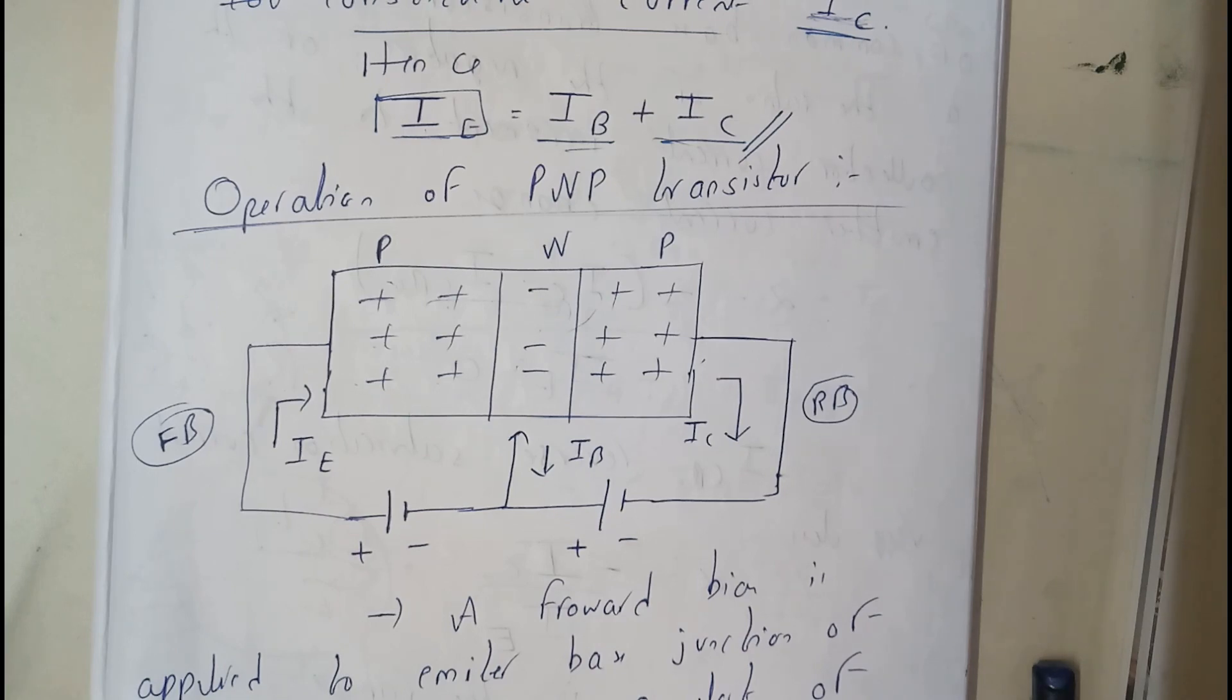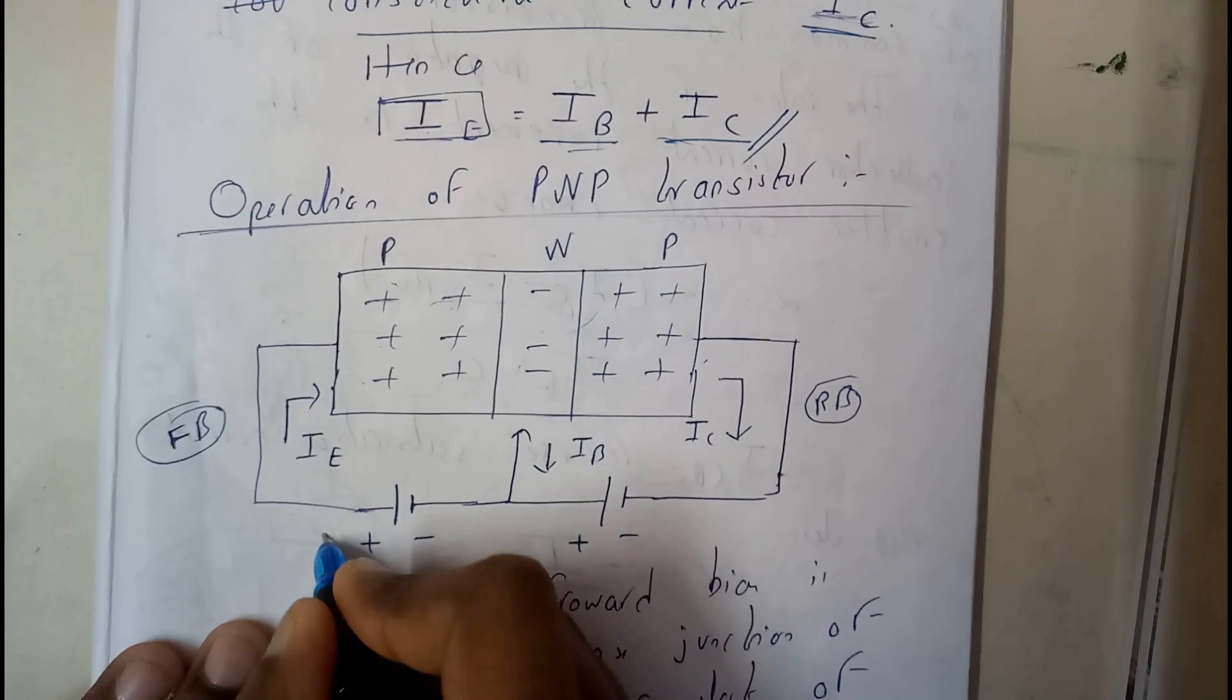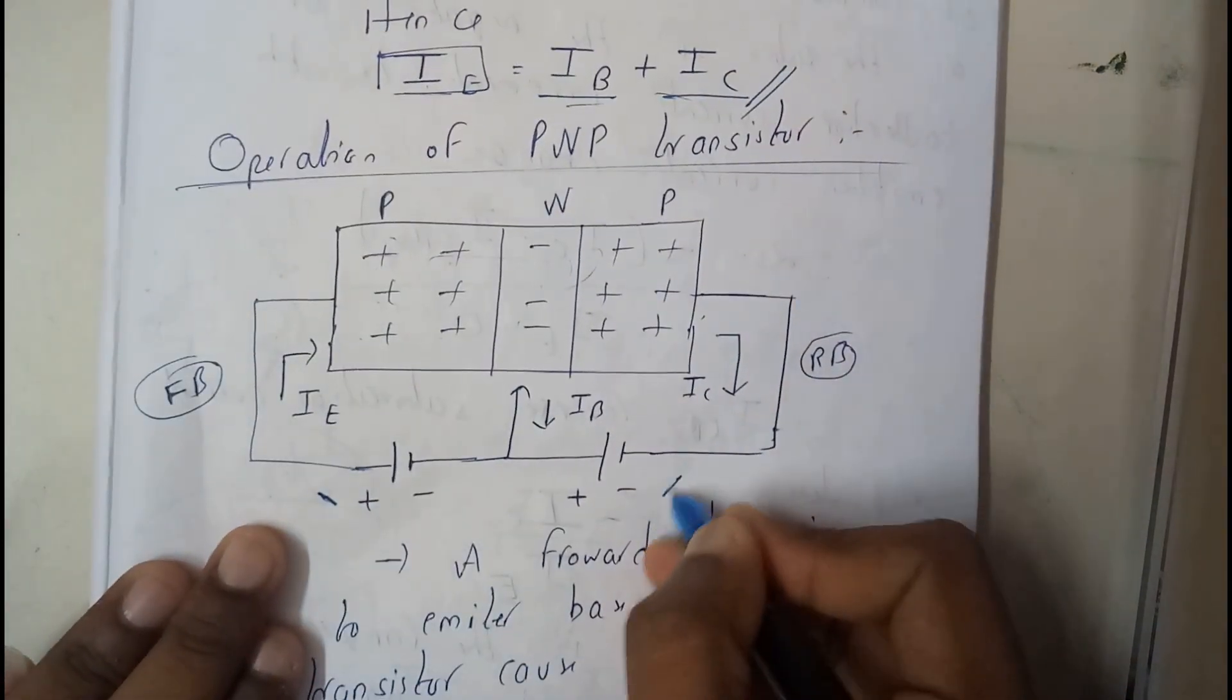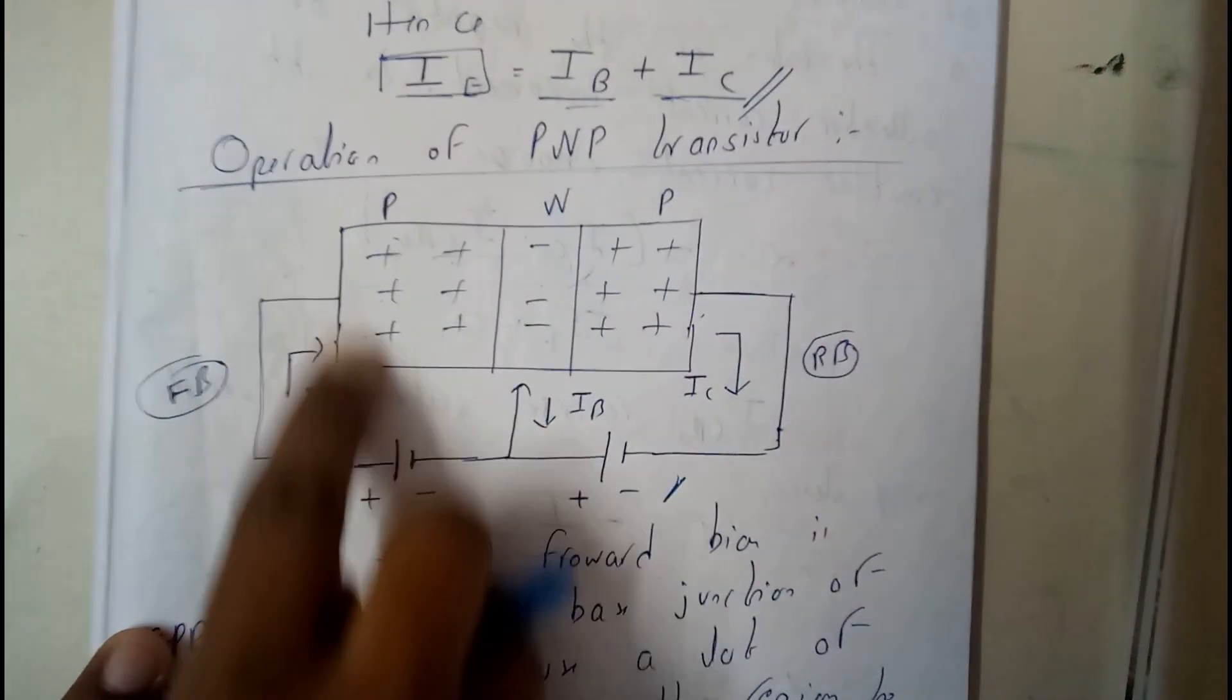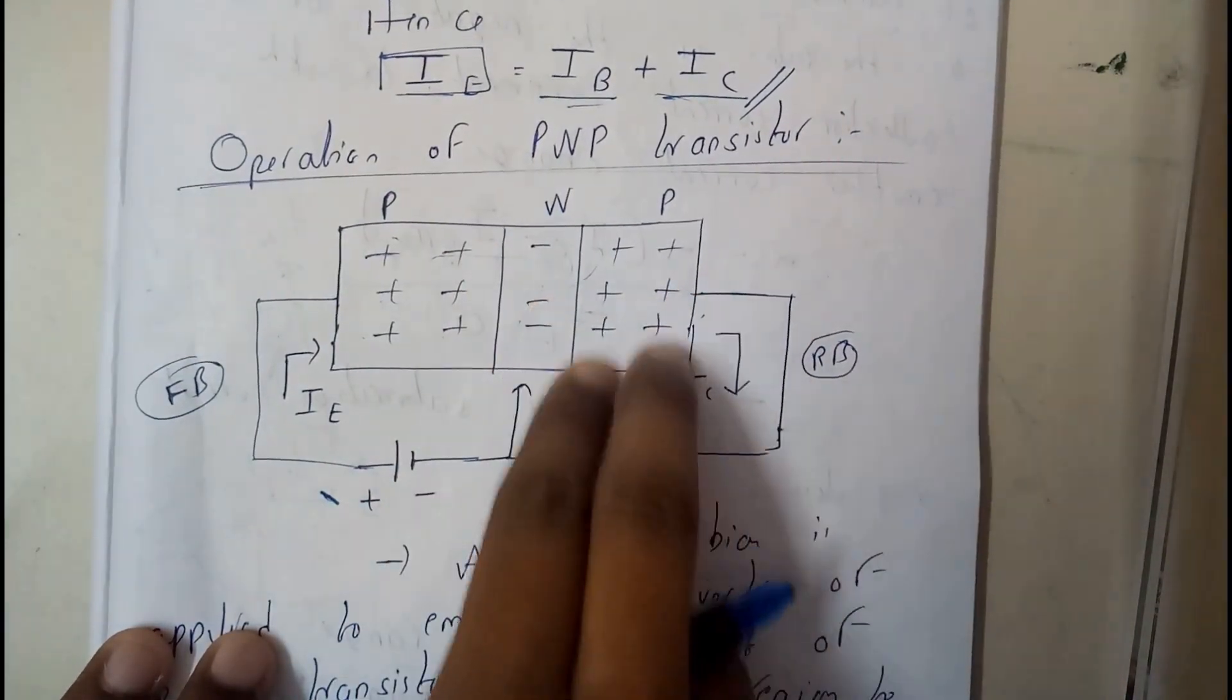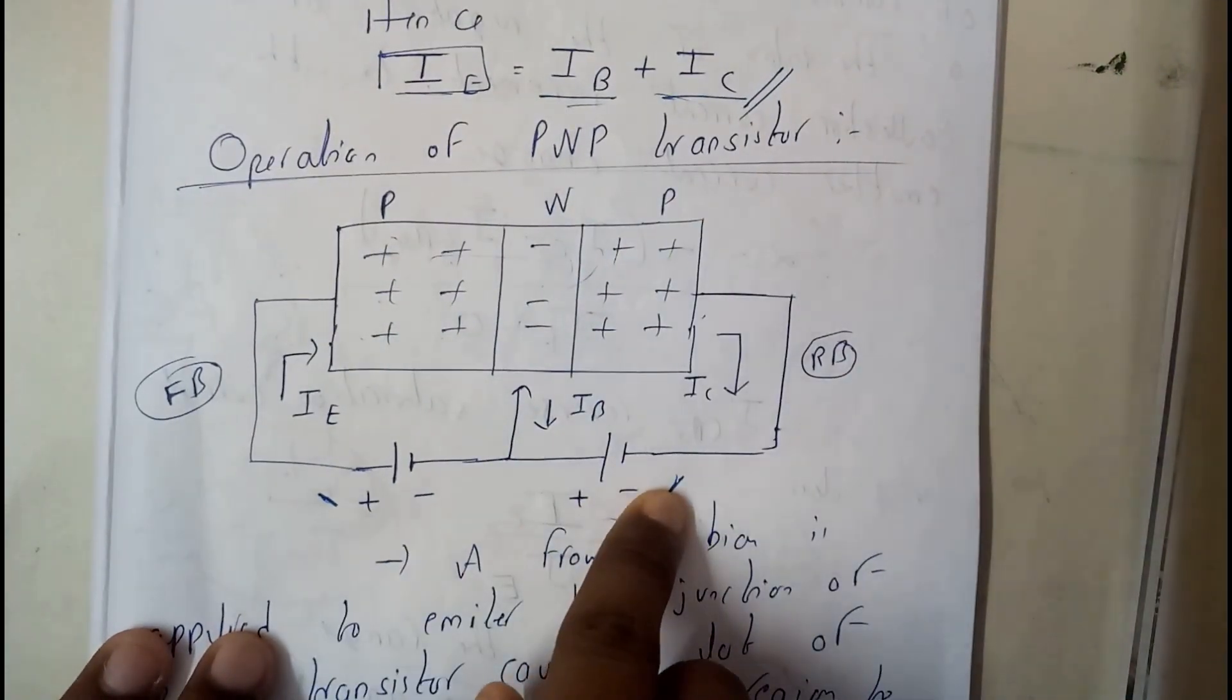Basically, I have told you that always a transistor should be run or attain the active region. Active region means in input we apply forward bias, in output we apply reverse bias. So in between the first PN junction we will be applying forward bias (P to N), and on the second junction we will be applying reverse bias (N to P). That's how we draw the diagram.